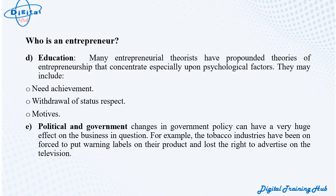Education: Many entrepreneurial theorists have propounded theories concentrating on psychological factors including need achievement, withdrawal of status respect, and motives. Political and government changes in government policy can have a very large effect on business — for example, the tobacco industry has been forced to put warning labels on their products and lost the right to advertise on television.